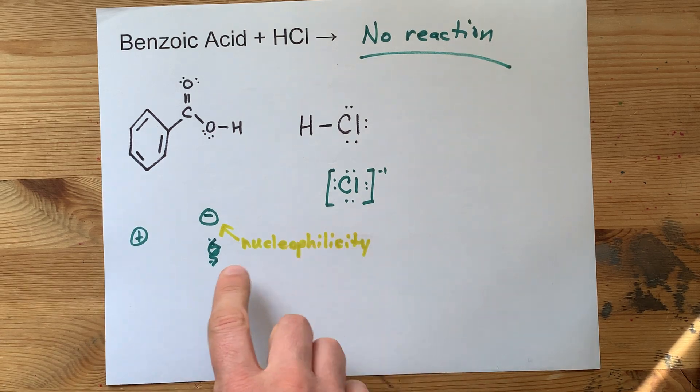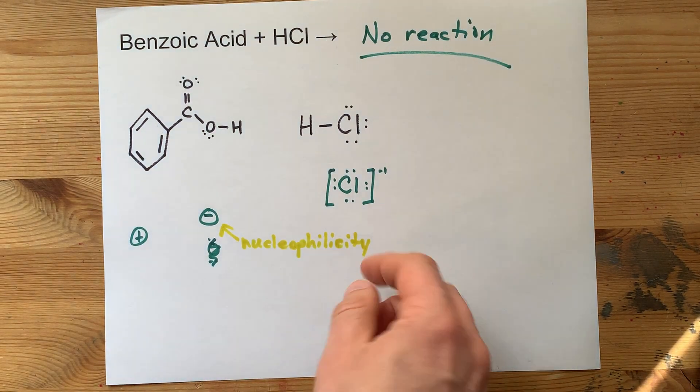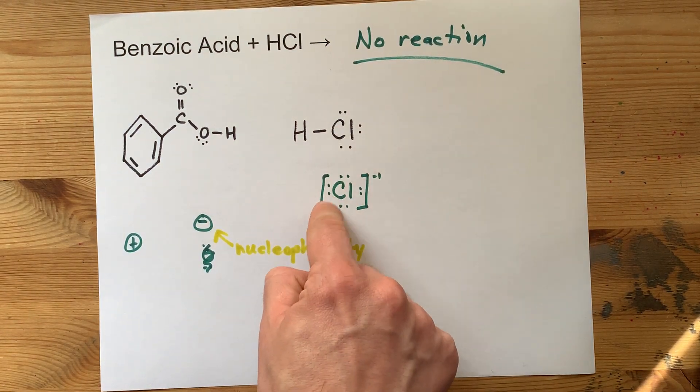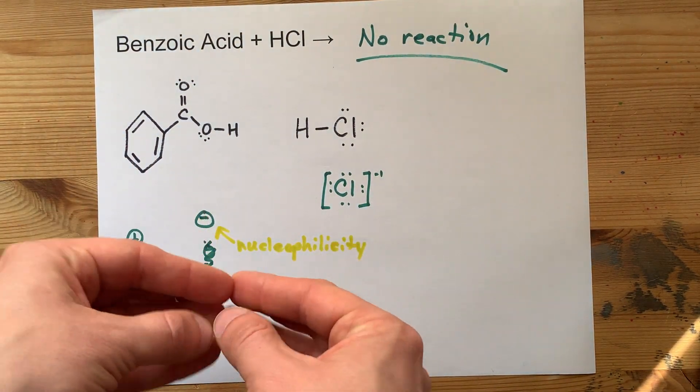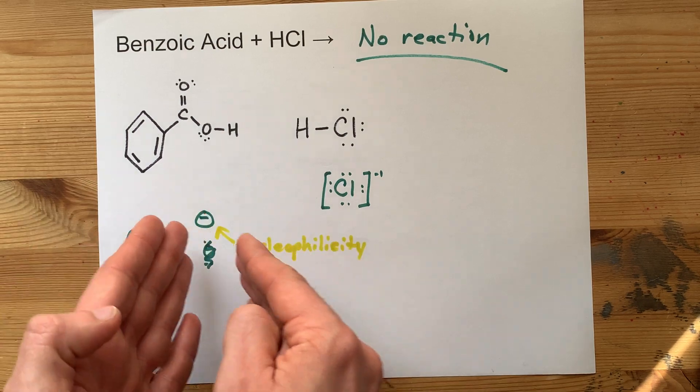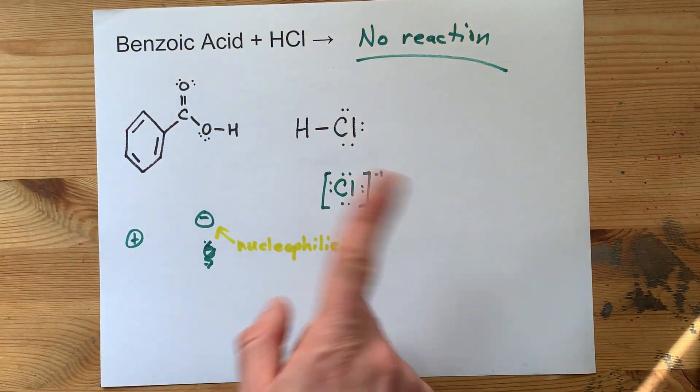I think you'll find, if you find a chart of nucleophilicity, chloride, Cl-, is low on that list. There's so many other things that can actually make that attack. Chloride ain't one of them.